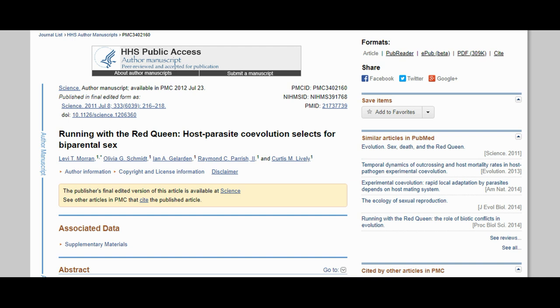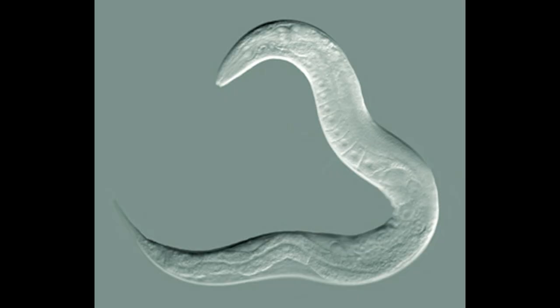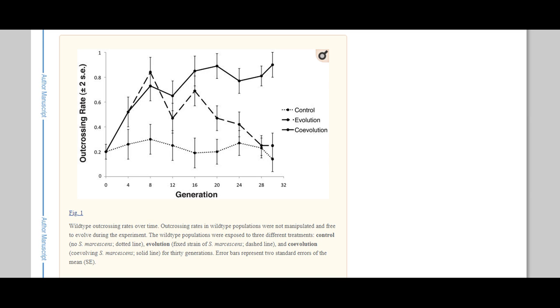Another experiment in sexual selection, researchers tested the nematode Caenorhabditis elegans by growing them in an environment with the bacteria Serratia marcescens. Documented in the 2011 paper, Running with the Red Queen, Host Parasite Coevolution Selects for Bi-Parental Sex. C. elegans can reproduce either asexually or sexually. In the control, representing normal conditions, C. elegans reproduces sexually only about 20% of the time. The researchers then prepared two treatments, evolution and coevolution. The evolution treatment involved exposing C. elegans to a single strain of S. marcescens, while the coevolution treatment involved exposing C. elegans to strains of S. marcescens continually selected for pathogenicity.